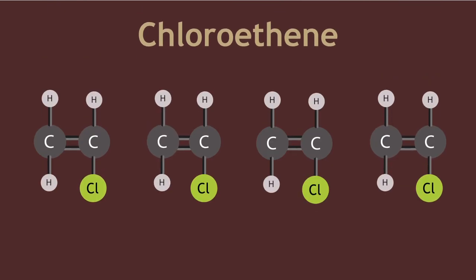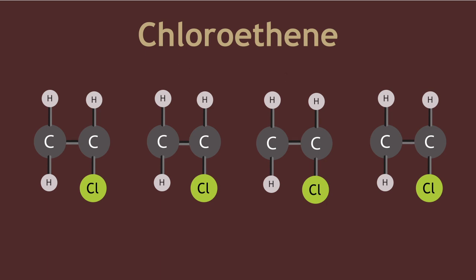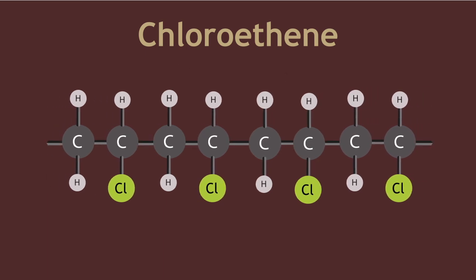Here are chloroethene molecules in a row. Now let us break the double bond and join these molecules together to form a polymer.